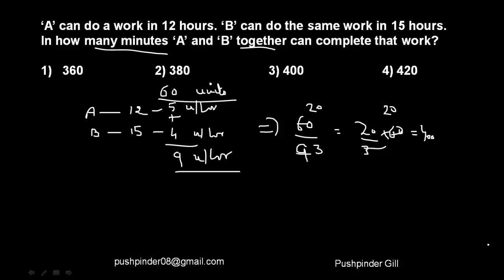Quick recap: A does the job in 12 hours, B in 15 hours, so I assumed the work to be 60 units. A finishes 5 units every hour, B finishes 4 units every hour. Together they finish 9 units every hour. Work is 60 units, so time = 60/9 hours. To convert hours into minutes, multiply by 60, and we get 400 minutes.